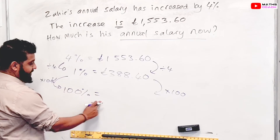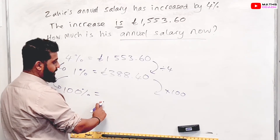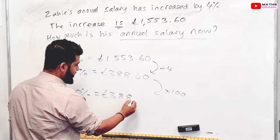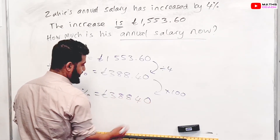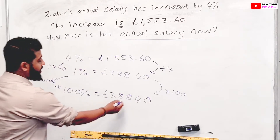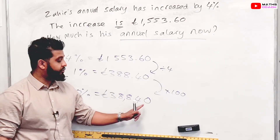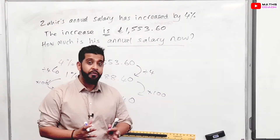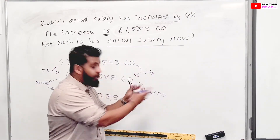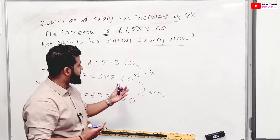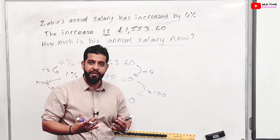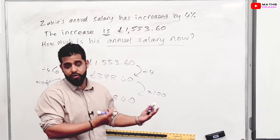We multiply by 100 and now we have the 100% value, which is the current salary. That gives us £38,840. So Zahir is now earning £38,840. Some of you may be wondering how you could have used the previous formula for this — I'll show you just so you have one method if you prefer, but remember you have to use algebra.